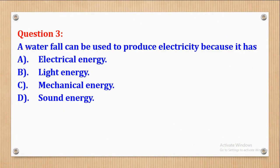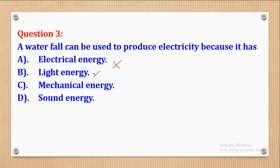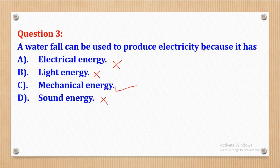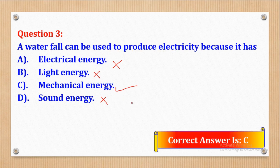Question 3 says a waterfall can be used to produce electricity because it has: A, electrical energy; B, light energy; C, mechanical energy; and D, sound energy. You don't need electrical energy to produce electricity since they are the same thing. Waterfalls don't have light energy, so we cross that out. Sound is not what produces electricity, so we cross that out. The remaining option is mechanical energy. Therefore, our answer is part C.